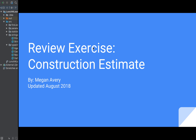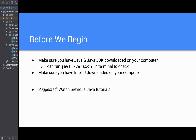This is going to be a review of what we've covered so far about Java. During this exercise, we're going to do a construction estimate problem. Before we begin, make sure that you have Java and the Java JDK downloaded on your computer. You can run java-version in your terminal to check.